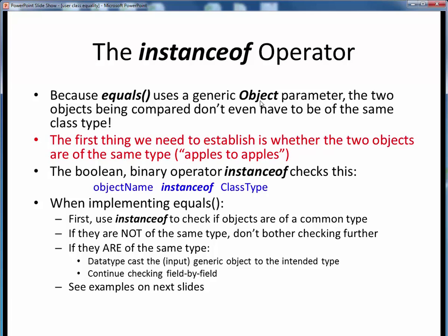Now in the previous method interface definition, note that we said the input was of the generic object type, which means that the two objects being compared don't even have to be of the same class type.